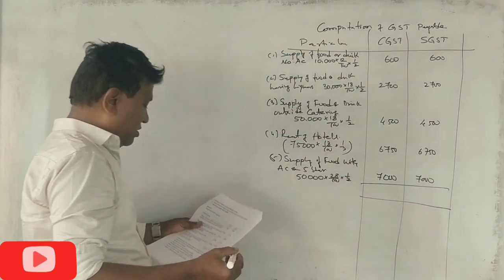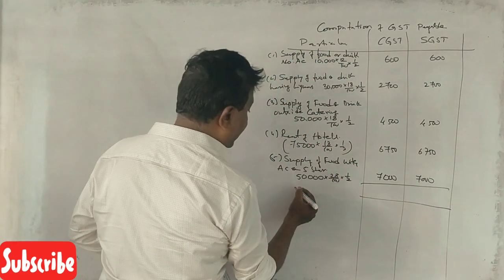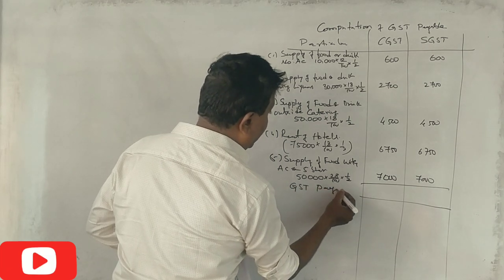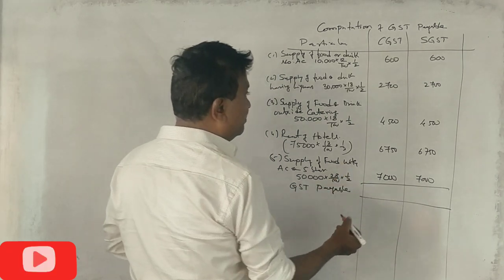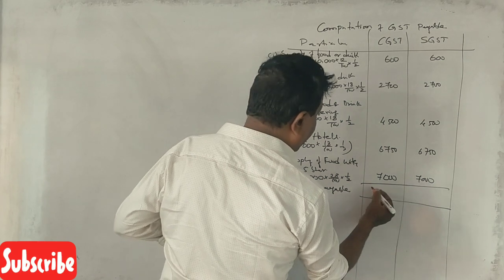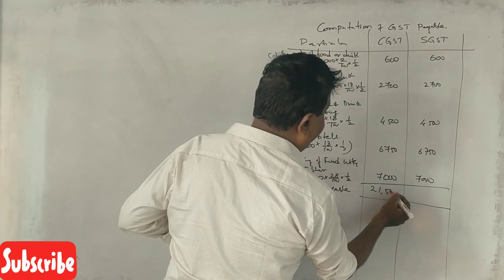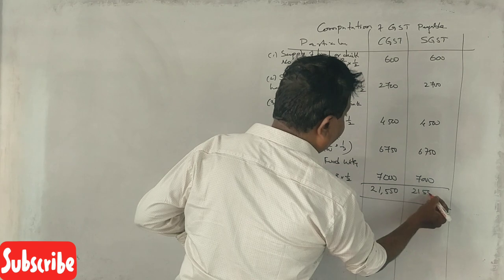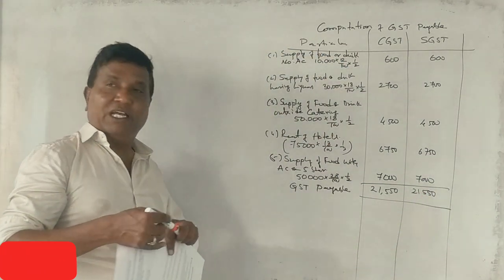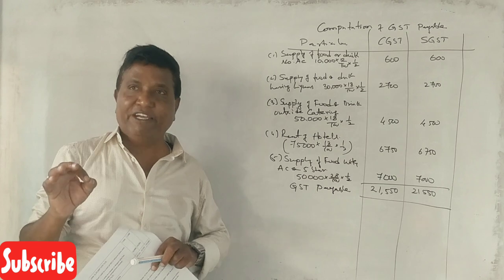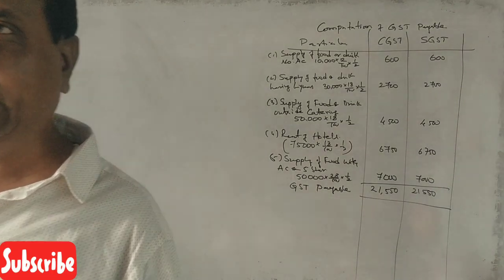GST payable. GST 21,550. That's how you do it. Good.